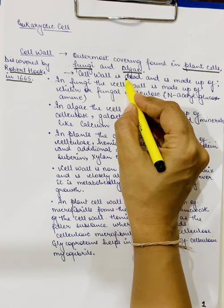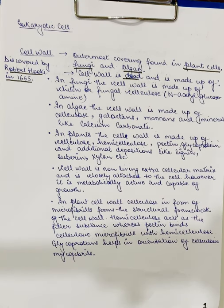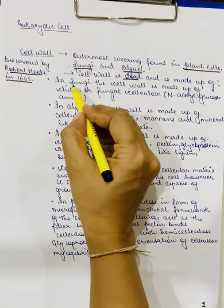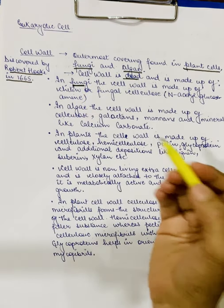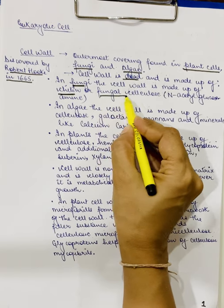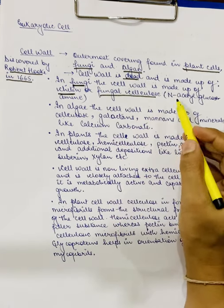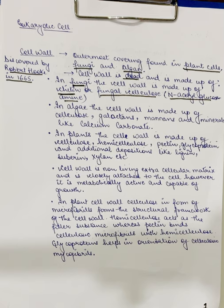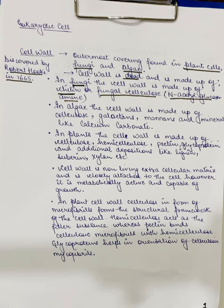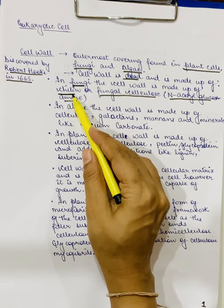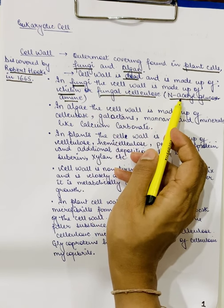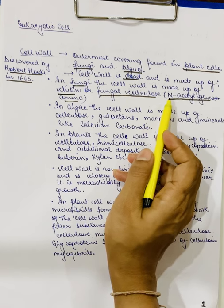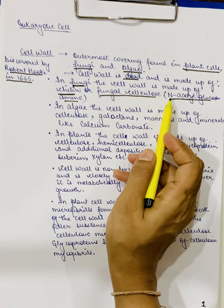Cell wall is a dead part of the cell — we even call it the extracellular matrix because it is the dead part of the cell and it is secreted by the cell itself. In case of fungi, the cell wall is made up of chitin. Chitin is called as fungal cellulose and it is made up of N-acetyl glucosamine. This chitin, which is present in the cell wall of fungi, is even found in the exoskeleton of insects. So, fungal cell wall is made up of chitin, which is also called as fungal cellulose, and it is made up of N-acetyl glucosamine.